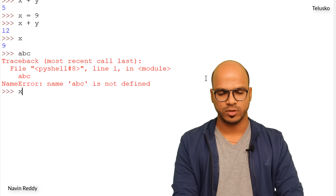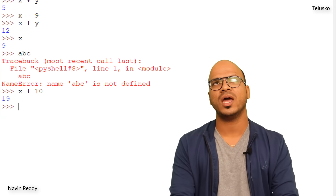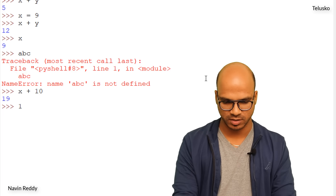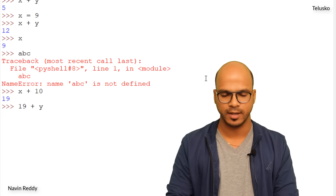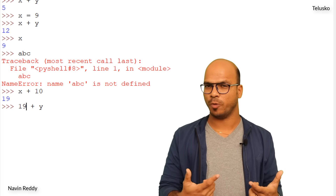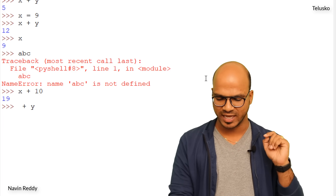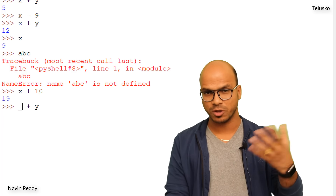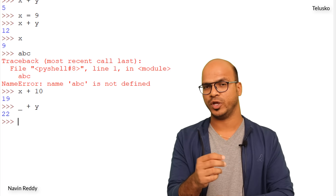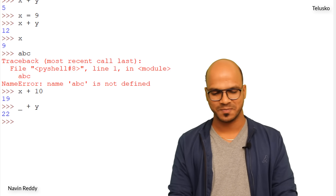Now I'll say x plus 10, which gives 19. What if I want to add that 19 with y? If you want to use the output of the previous operation, you can use underscore. Underscore represents the output of the previous operation. So underscore plus y gives 22 — that's 19 plus 3. This works!